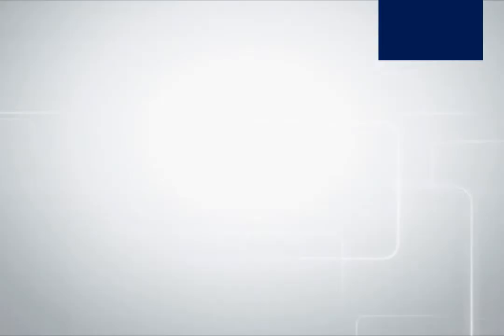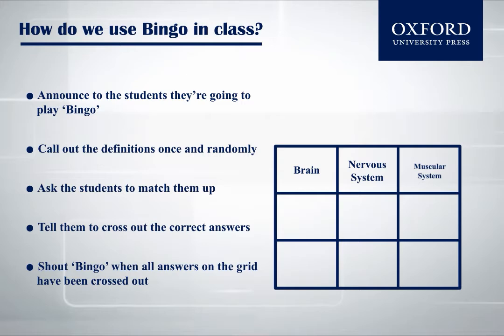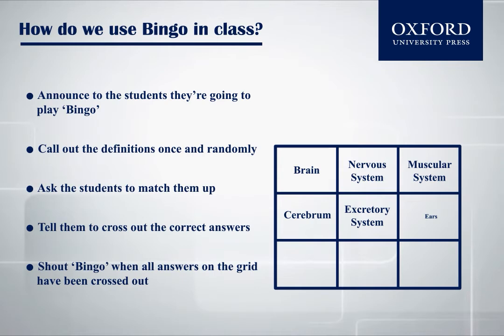Announce to the students that they are going to play Bingo. Let them know that this is a game of chance and there is a possibility of the definitions not matching with the words on the grid. So, call out the definitions once and randomly. Ask the students to match them up and tell them to cross out the correct answers.